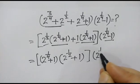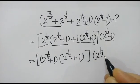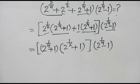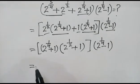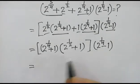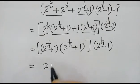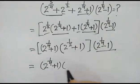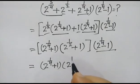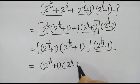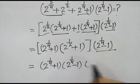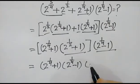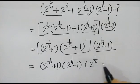2 to the power 1 by 4 plus 1. So in the next step we can write: 2 to the power 1 by 4 plus 1, and this 2 to the power 1 by 4 minus 1, and this 2 to the power 1 by 4 minus 1.